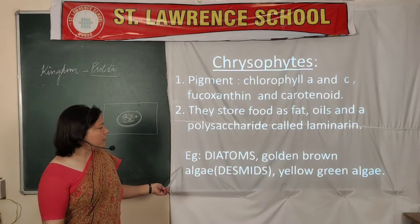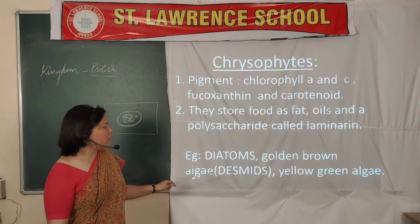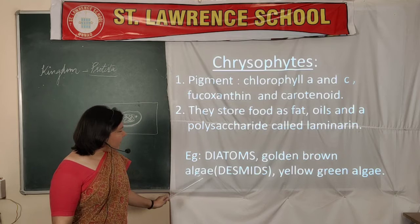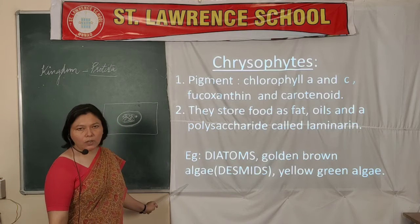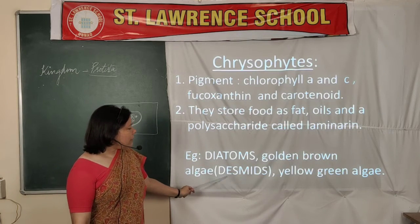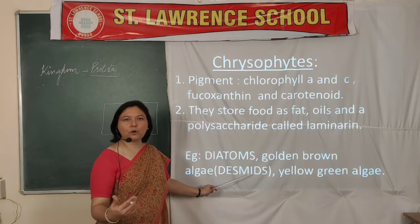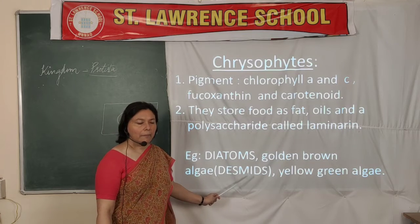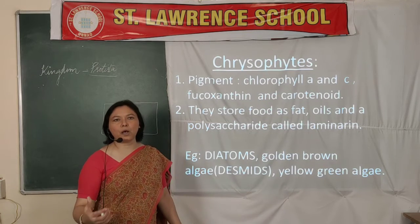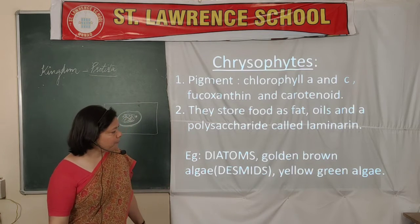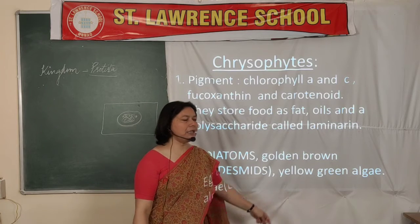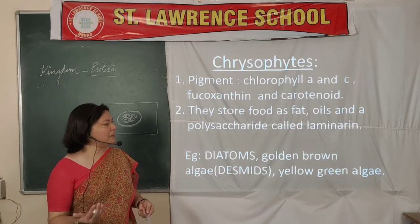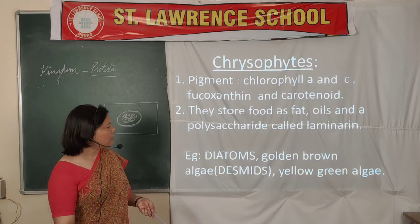Examples of Chrysophyta include diatoms and golden-brown algae — biologically called desmids but commonly called golden-brown algae — and also yellow-green algae. The coloration depends upon the type of chlorophyll pigment found in them.